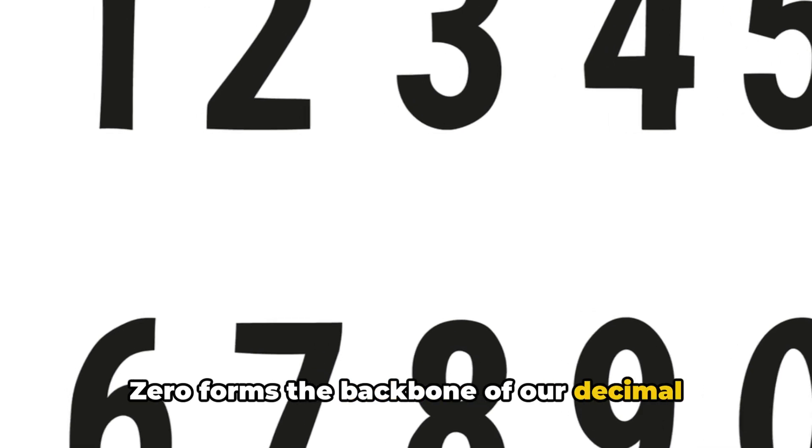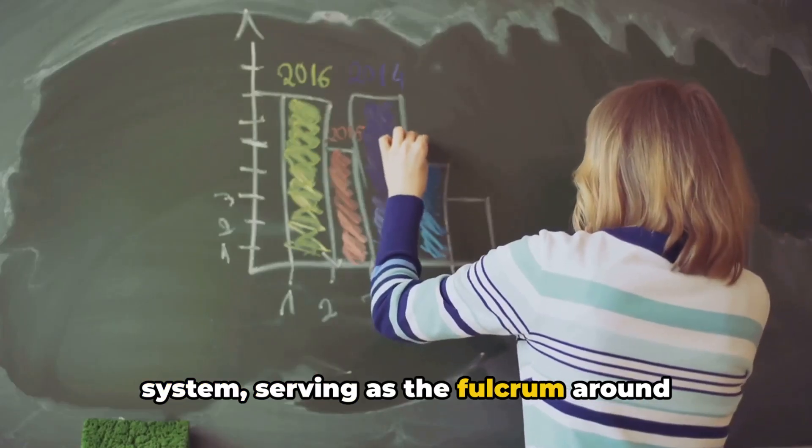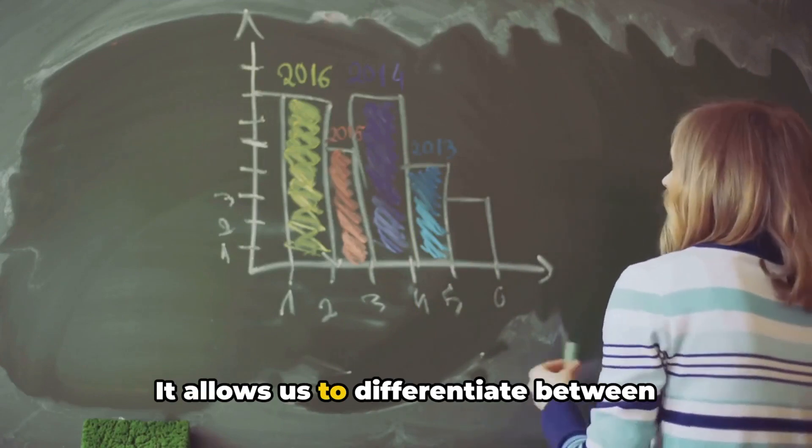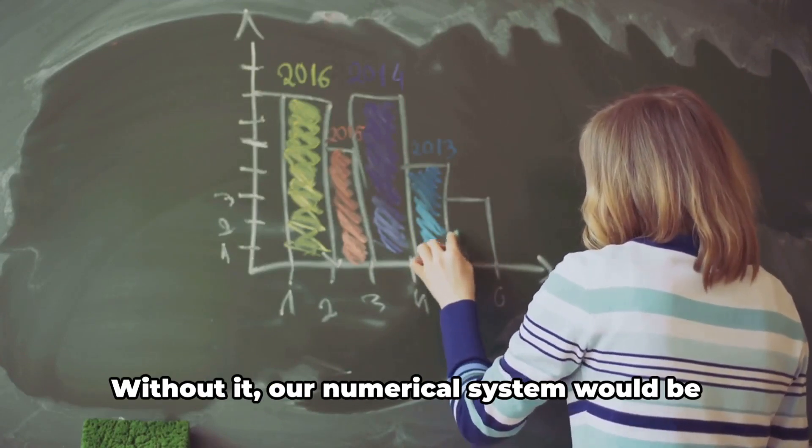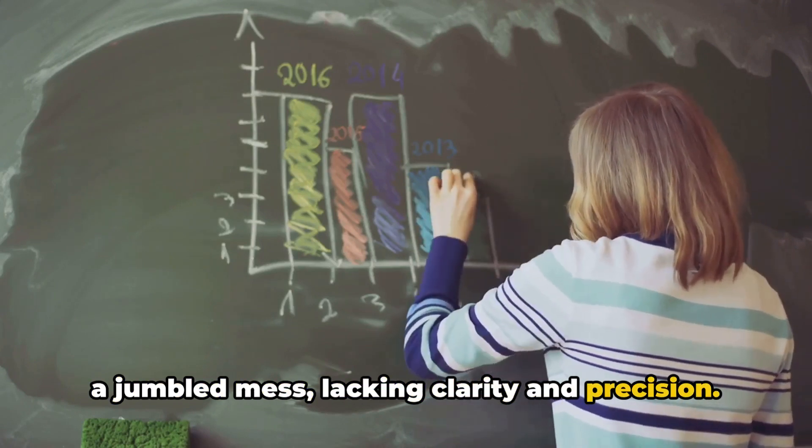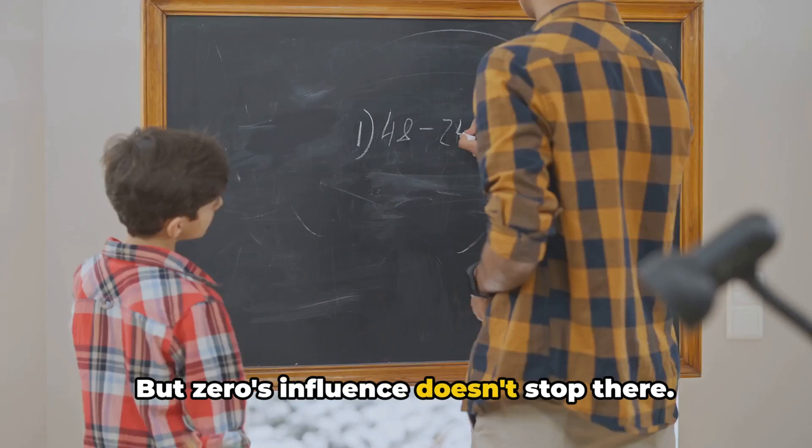Zero forms the backbone of our decimal system, serving as the fulcrum around which all other digits revolve. It allows us to differentiate between 1, 10 and 100. Without it our numerical system would be a jumbled mess lacking clarity and precision, but zero's influence doesn't stop there.